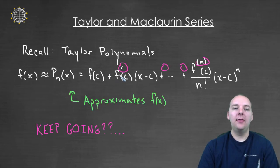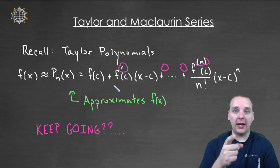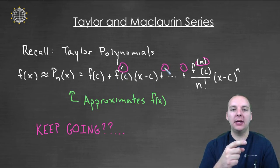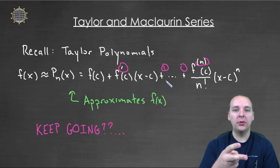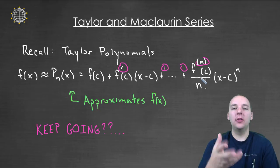You have f prime of c, so that's first derivative, divided by one factorial, times x minus c to the first power. Then the next term is the second derivative of f, divided by two factorial, times x minus c to the second, right, and then to the third.